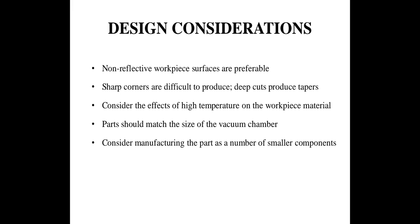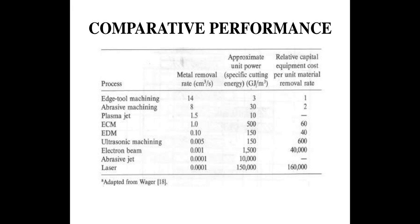Through a literature review, I have a comparative performance table of different non-traditional machining processes. The table lists different processes with their metal removal rates, approximate unit power, and relative capital equipment cost per unit MRR. For electron beam machining, the MRR is 0.001 cubic centimeters per second. Comparing with other processes shows the relative importance of EBM.